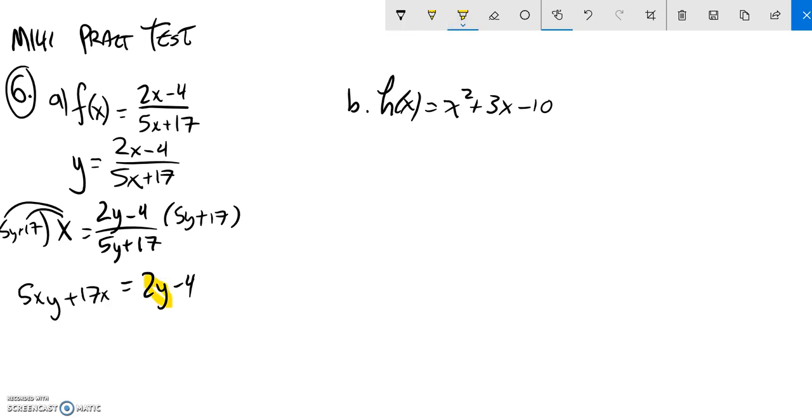So now I notice I have y's on both sides. I'm going to get all the y's on the same side, and anything that doesn't have a y on the opposite side. So I'm going to subtract 17x from both sides. And I'm going to subtract 2y from both sides as well.